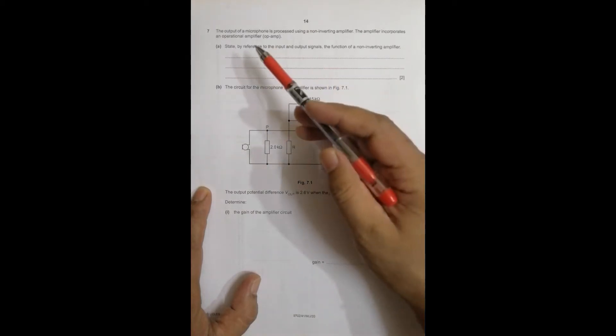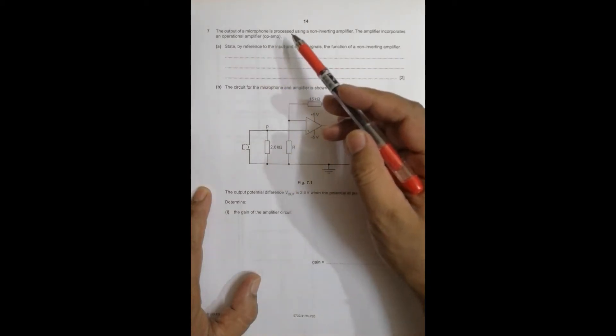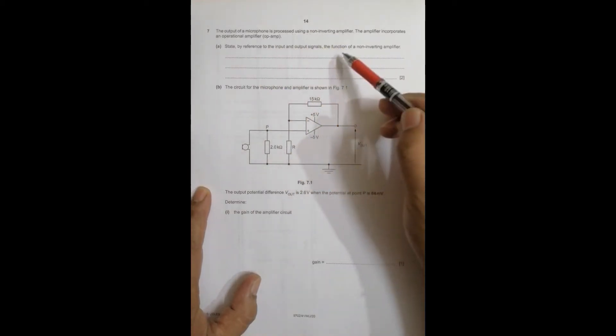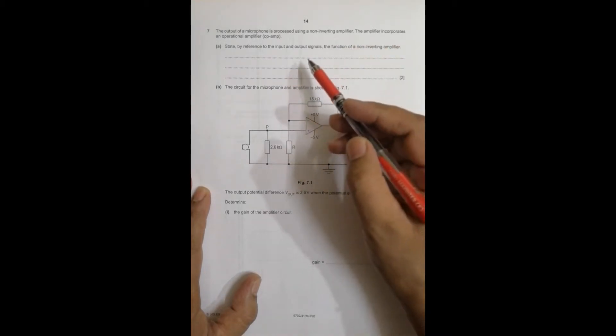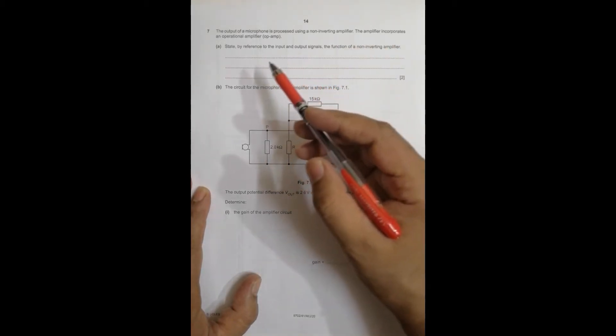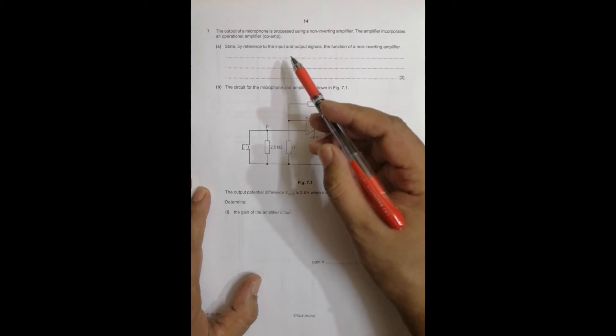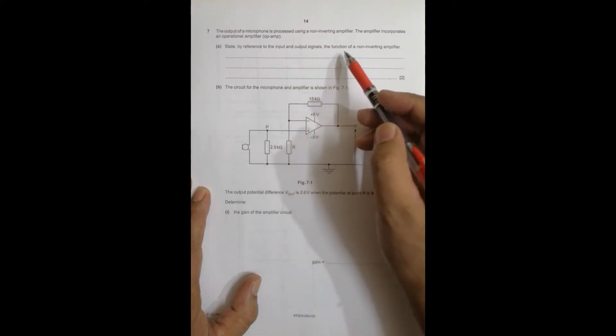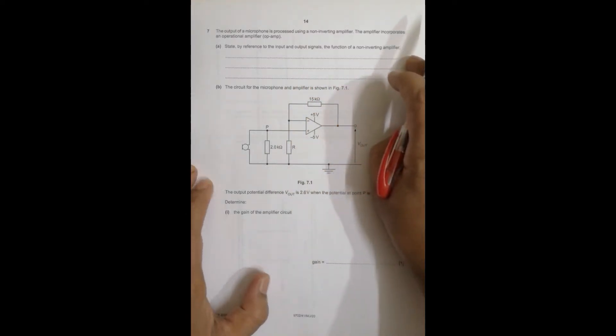It says that the output of a microphone is processed using a non-inverting amplifier. The amplifier incorporates an operational amplifier OPAMP. State by reference to the input and output signals the functions of a non-inverting amplifier.